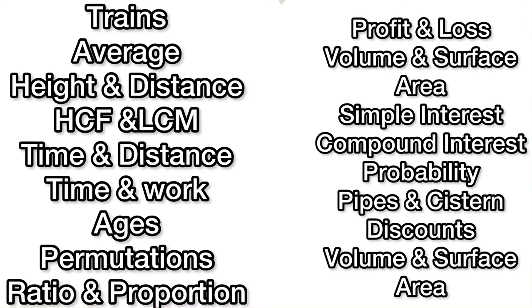In quantitative aptitude, there are many sub-topics like train problems, age problems, simple interest, compound interest, boats and streams, ratio and proportion, and many different categories. In these topics it is very easy, but there are many different types of questions in each topic. Many students feel overwhelmed, but don't worry — I am going to make it easy for you.